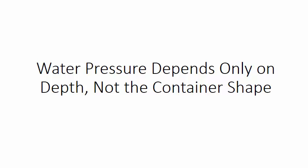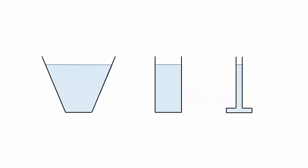Water pressure depends only on depth, not the container shape. Here we have three containers of the same depth. The pressure at the bottom of each container is exactly the same for all three containers because they have the same depth. Even though there's much more water in this one, weighing a lot more than this one, the pressure and therefore the force on the bottom of these containers is exactly the same. How is that possible?